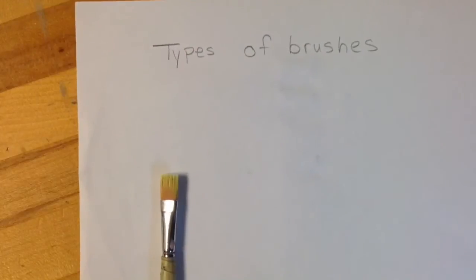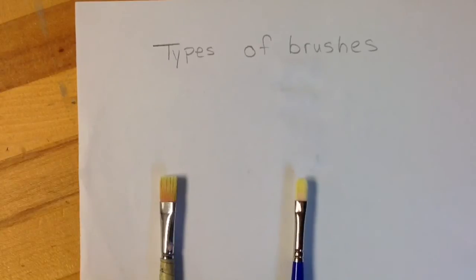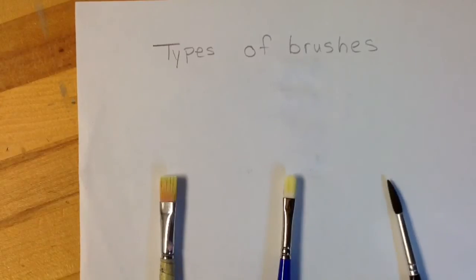So the three types of brushes are a flat brush, a filbert brush, and a round brush.